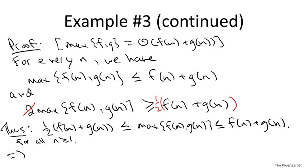And this holds no matter what n is, any n at least one. And this is exactly what it means to prove that one function is theta of another. We've shown that for all n, not just for n sufficiently large, but in fact for all n, the point-wise maximum of f and g is wedged between suitable constant multiples of their sum.